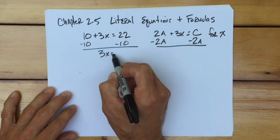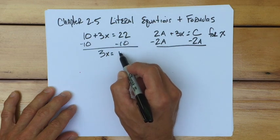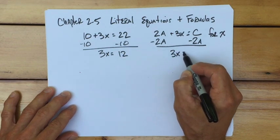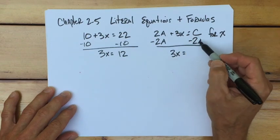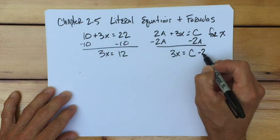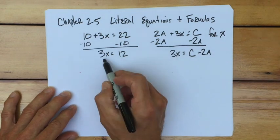So I'm going to do minus 2a to both sides, just like I did minus 10. Now, over here, I get 3x equals 22 minus 10 is 12, and we'd be ready to continue on. Over here, we get 3x equals, well, these are not like terms. I can't combine them together, so I'm going to write them c minus 2a. And that's what I write.